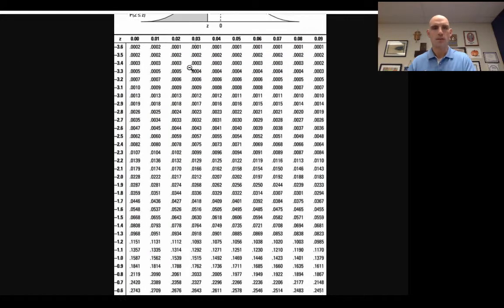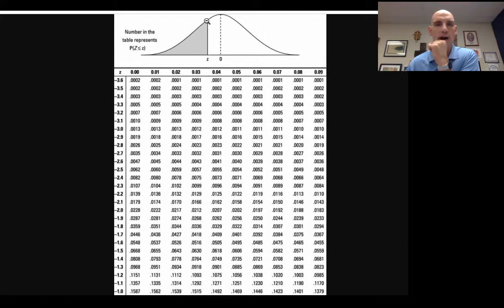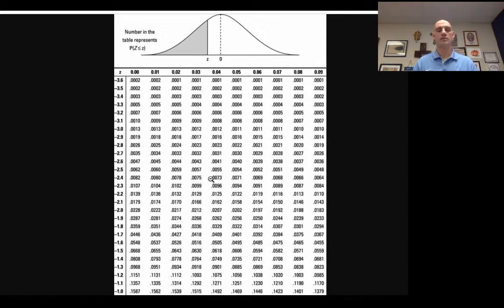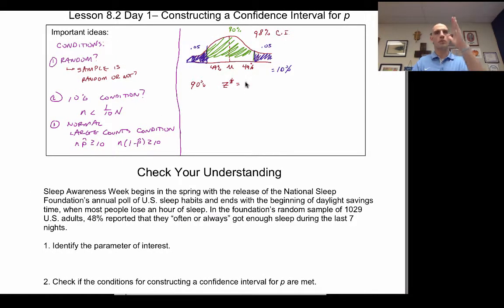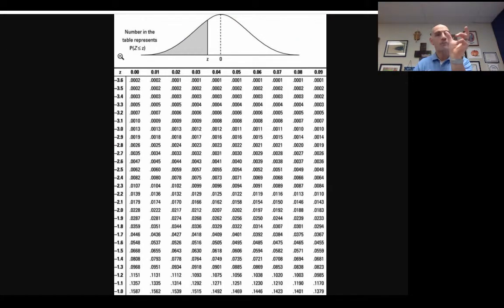Looking at Table A with shaded area 0.05, I find values of 0.0505 and 0.0495, so my data value falls between Z = −1.64 and −1.65. Because the curve is symmetrical, the Z-star for a 90% confidence interval is 1.645.